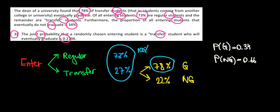We also know the proportion of students that graduate in total is 34% and those that don't is 66%. So whenever we have this tree with branches from one thing to the next, we're speaking about dependent probabilities.